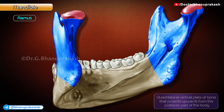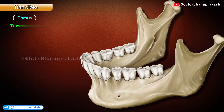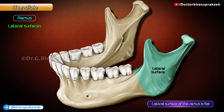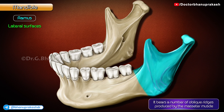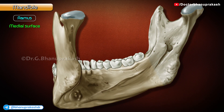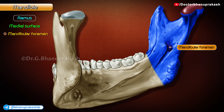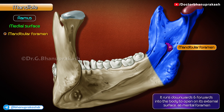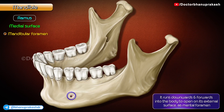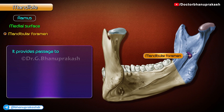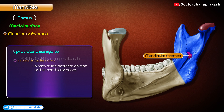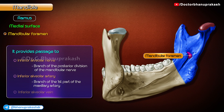Ramus. It is a quadrilateral vertical plate of bone that projects upwards from the posterior part of the body. It has two surfaces: a lateral and a medial. The lateral surface of the ramus is flat and bears a number of oblique ridges produced by the masseter muscle. The medial surface presents the mandibular foramen, located a little above the center of the ramus. This leads into the mandibular canal, which runs downwards and forwards into the body to open on its external surface as the mental foramen. It provides passage to the inferior alveolar nerve, a branch of the posterior division of the mandibular nerve, the inferior alveolar artery, a branch of the first part of the maxillary artery, and the inferior alveolar vein.